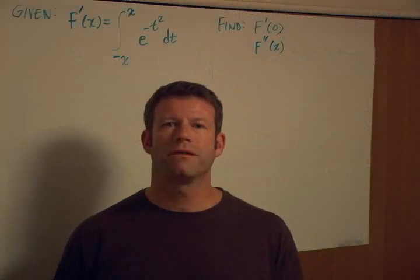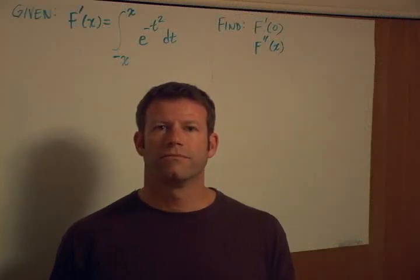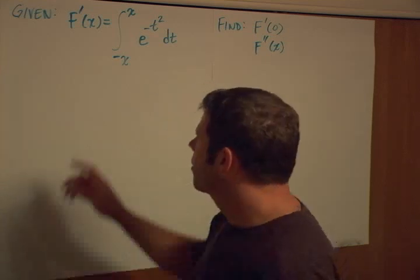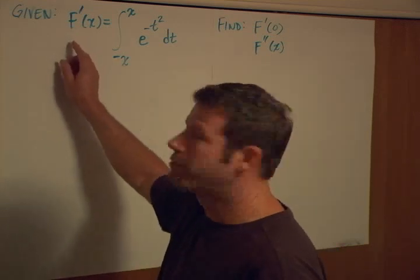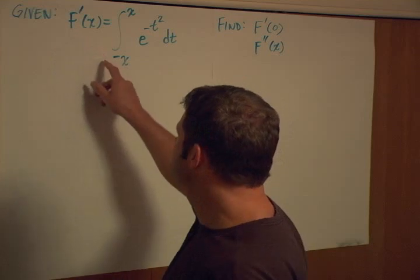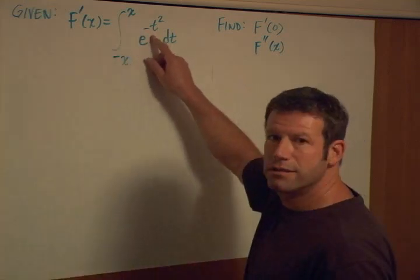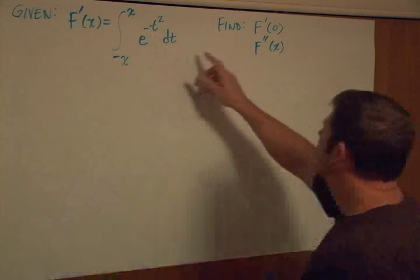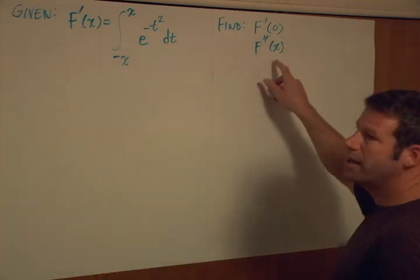We have another problem. This one is a classic multiple choice AP Calculus exam problem. Given that F prime of x is equal to the integral from minus x to x of e to the negative t squared dt, find f prime of zero and f double prime of x.